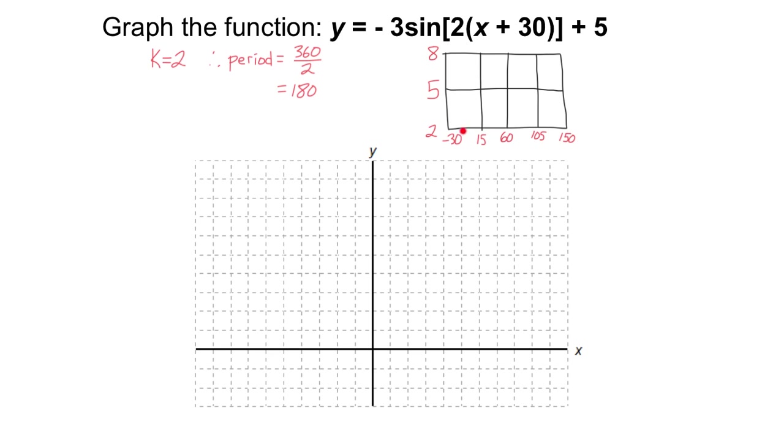And I can further figure out what values go on these key points. Halfway between minus 30 and 150 is 60. Halfway between minus 30 and 60 is 15. Halfway between 60 and 150 is 105. So now I've got all my values figured out for my x and my y-axis.